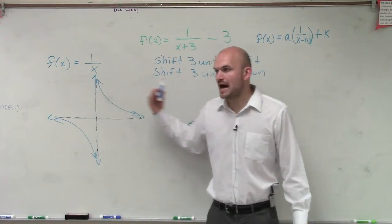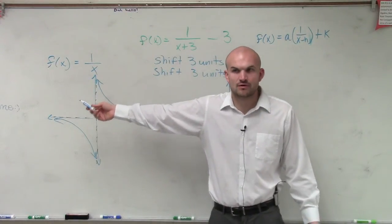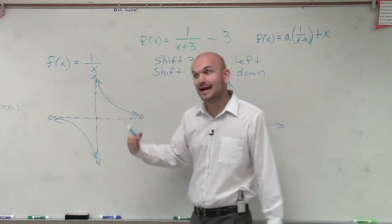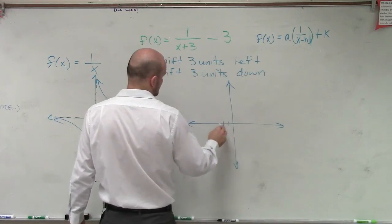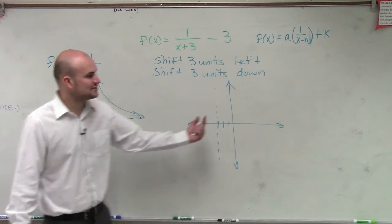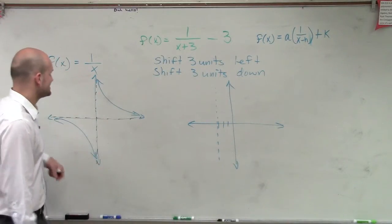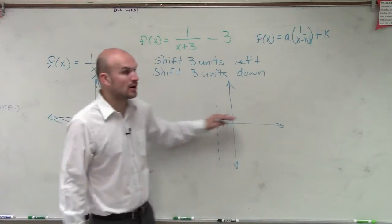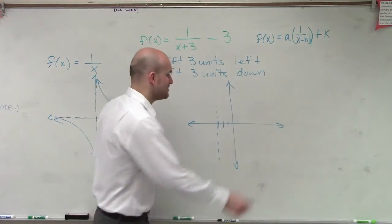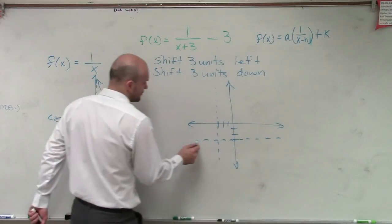So if I'm shifting this graph 3 units to the left, if my original vertical asymptote is at x equals 0, what's my new vertical asymptote going to be at? x equals negative 3. Because they're shifting to the left. So now I shifted my vertical asymptote to the left 3. Then it says I'm going to shift 3 units down. Well, remember, I have a horizontal asymptote at 0. So if I'm shifting 3 units down, that means my new horizontal asymptote is now going to be shifted 3 units down.